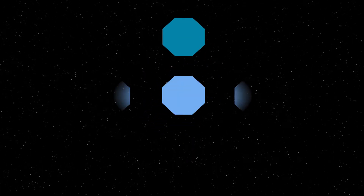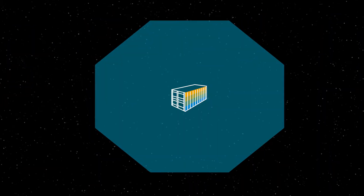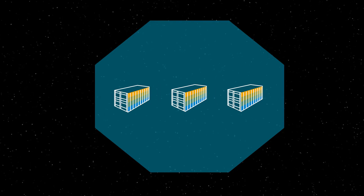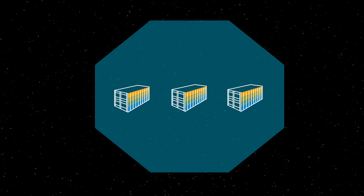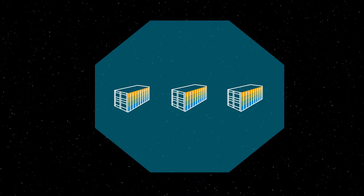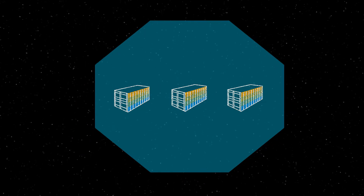Pods are the smallest and simplest Kubernetes objects. They represent a single instance of an application. They are a logical collection of one or more containers. Important to know is that they are ephemeral and don't have self-healing capabilities.